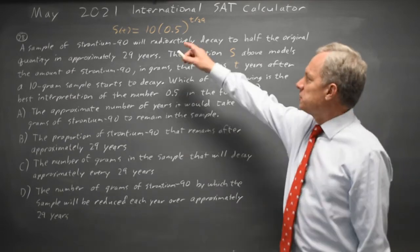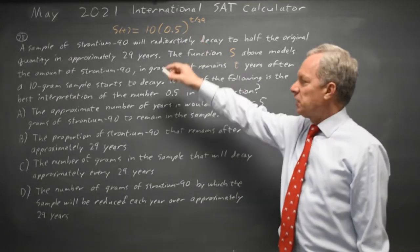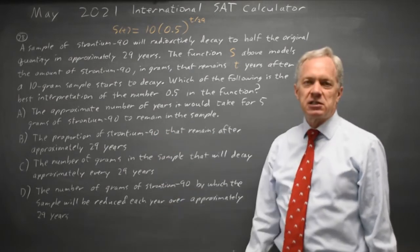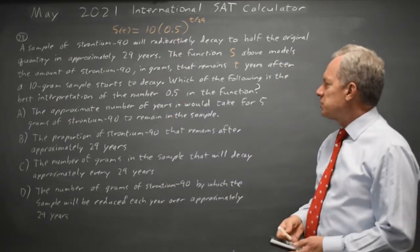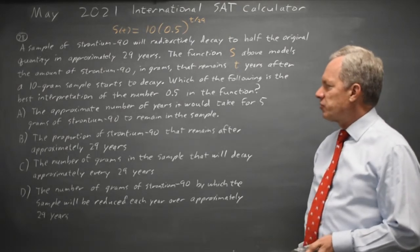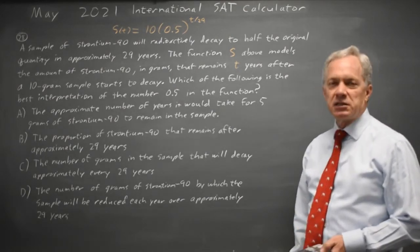They gave us the equation for strontium-90 and asked which interpretation of the 0.5 in the equation is correct. Choice A: the approximate number of years it would take for 5 grams of strontium to remain in the sample.